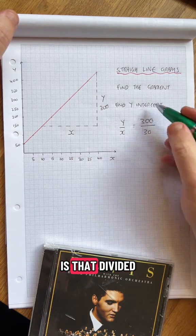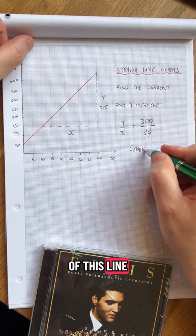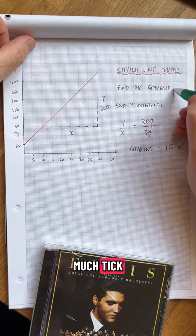So the gradient is that divided by that. So the gradient of this line is 10. Thank you very much. Tick.